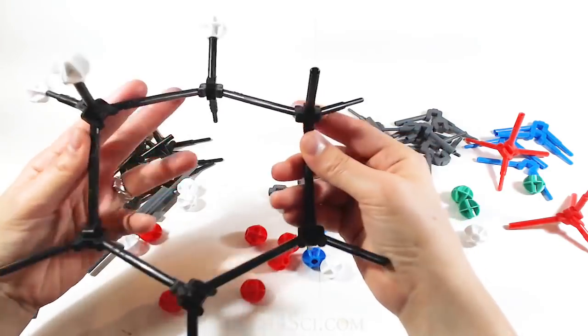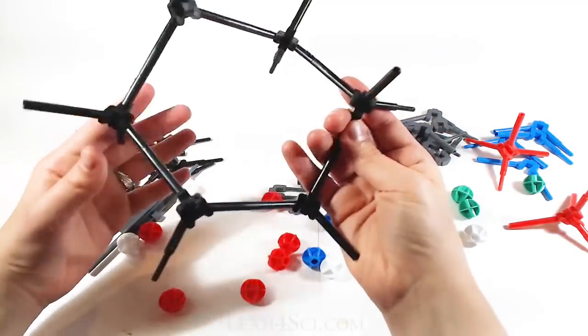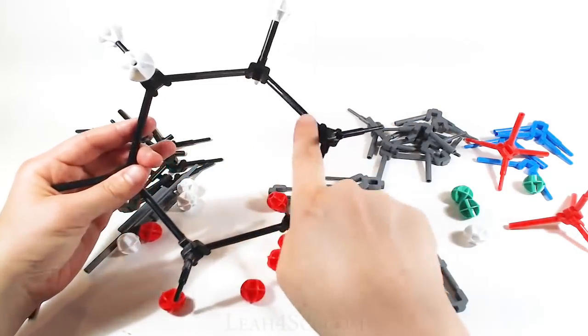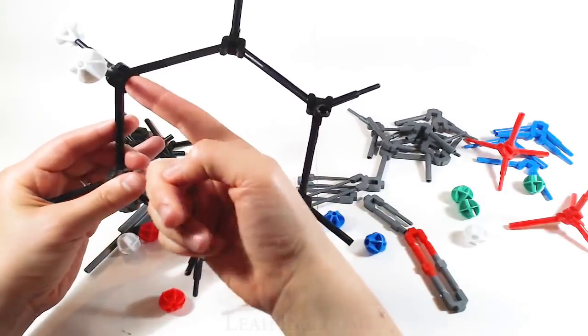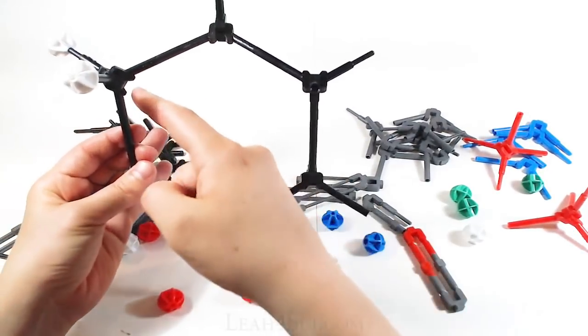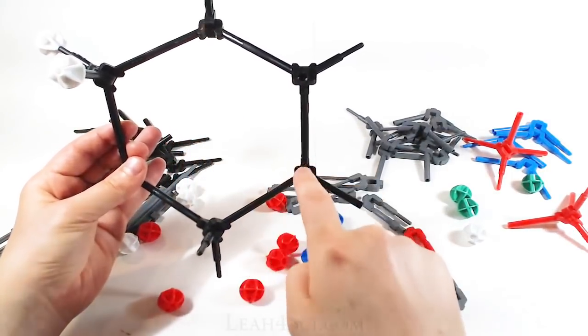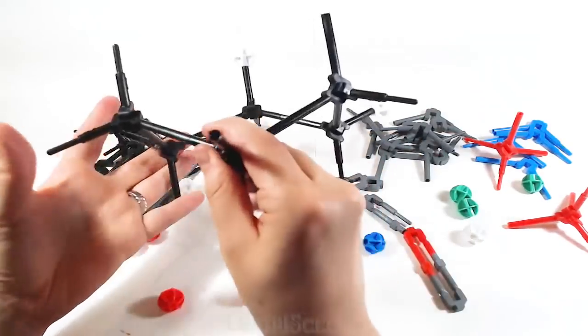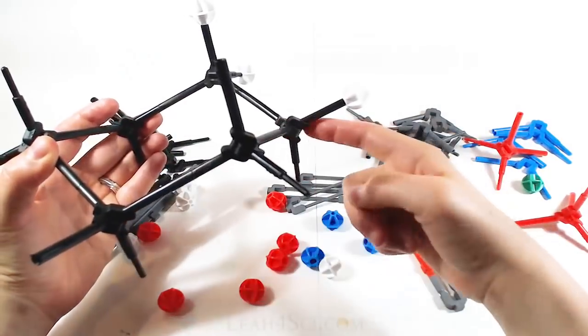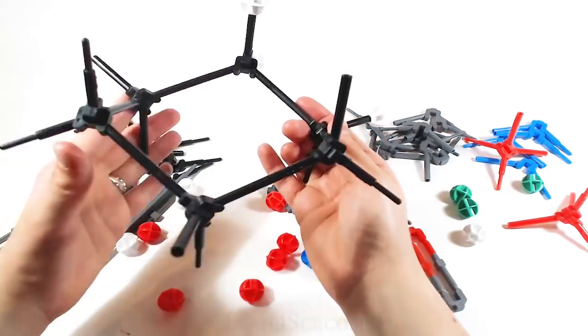To make it stable and to make that true chair, make sure that you have every other one facing up or towards you when you're looking at it head on. So we have up, down, up, down, up, down. And from the side, it's much easier to see up, down, up, down, up, and down.